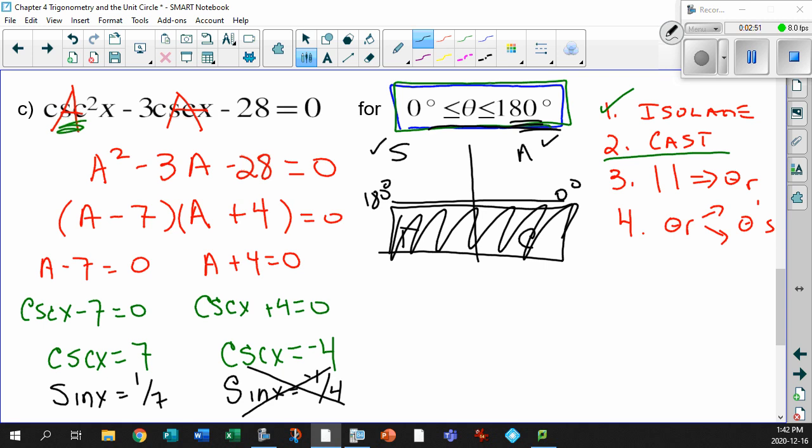Bye-bye. See you later. You're negative. Not going to deal with you. So the only thing that you need to deal with, then, is this guy right here. The fact that you have sine x equals 1 seventh.